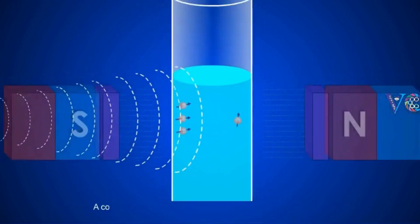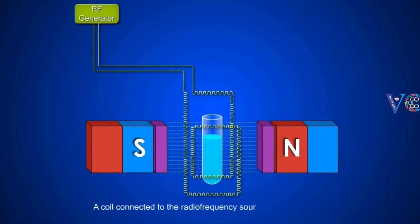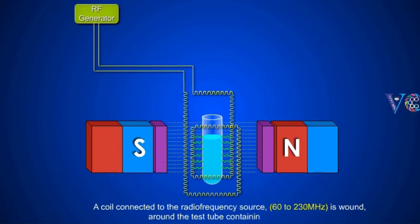A coil connected to the radio frequency source, operating at 60 to 230 MHz, is wound around the test tube containing the sample.